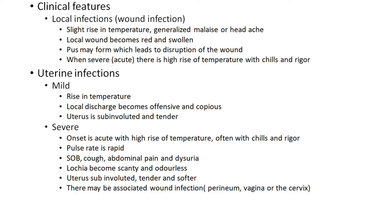Clinical features — if it is a local infection, there is a slight rise in temperature, generalized malaise or headache, and the local wound becomes red and swollen with pus formation, which may lead to disruption of the wound. If severe, there is a high rise of temperature with chills and rigor. In mild uterine infection, there is a rise in temperature, local discharge becomes offensive and copious, and the uterus is sub-involuted and tender.